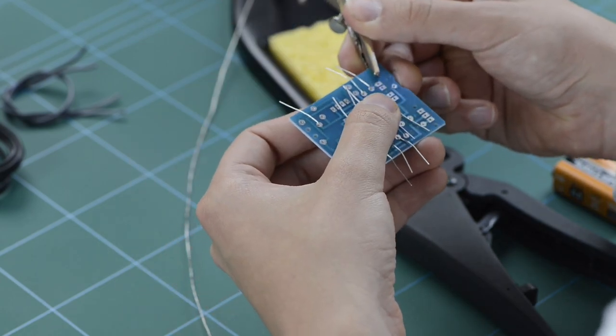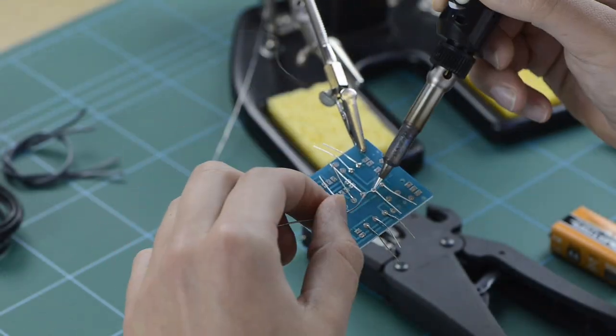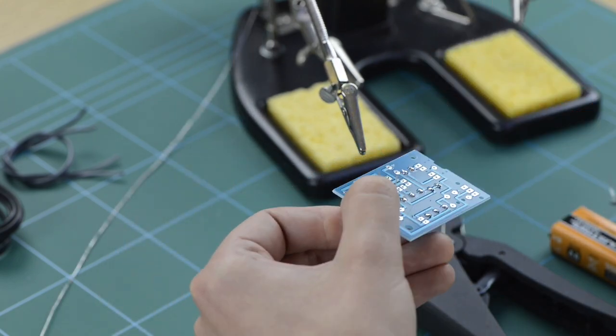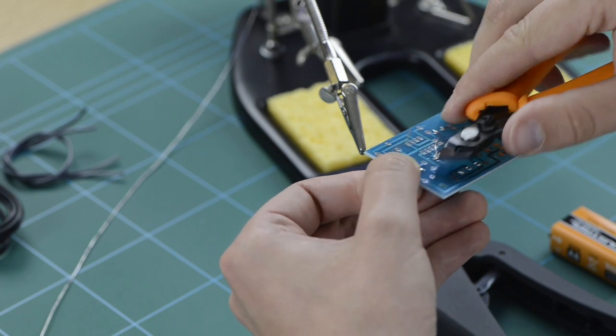Flip the board into your helping hands and solder the legs to the contacts located on the rear of the board. When all the legs have been soldered in place, remove any excess material from the legs with your side cutters.